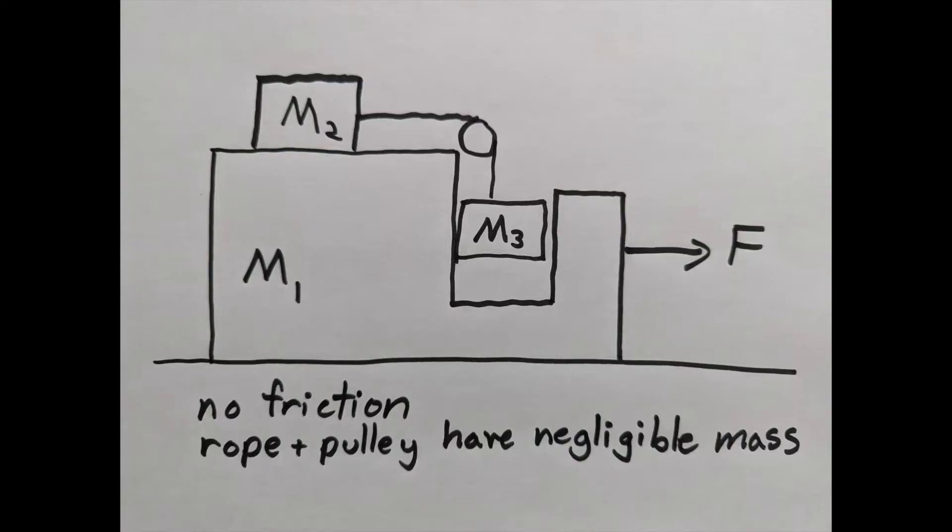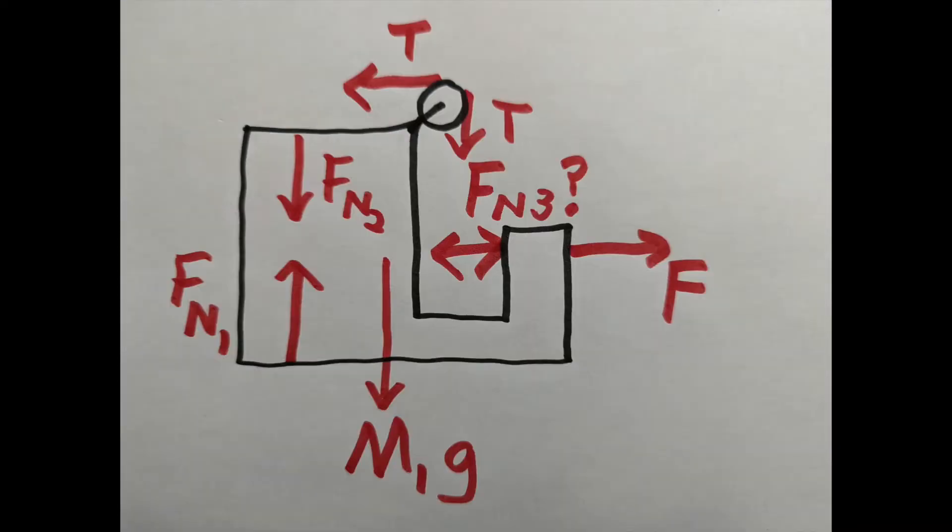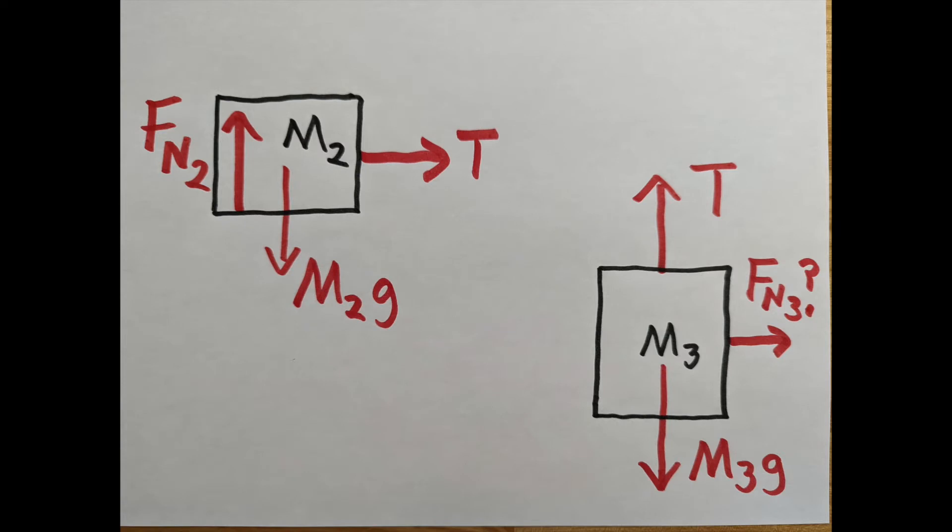Since this is an F equals ma problem, we're going to start with a free body diagram for each object. This little mess is the force diagram for m1. Let's hope we don't have to use it. The force diagrams for mass 2 and mass 3 are much simpler. On mass 3, it wasn't immediately obvious to me whether there's going to be a normal force, and if so, which way it's going to point.